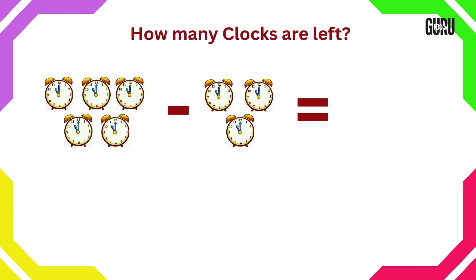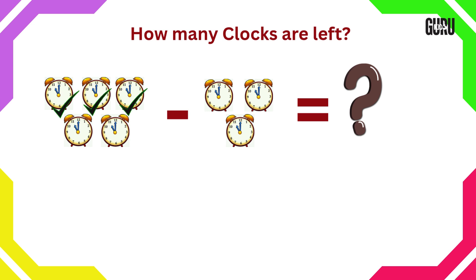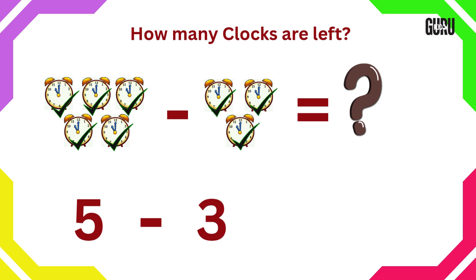How many clocks are left? Here we have to do subtraction. Let's count. 1, 2, 3, 4, 5 and 1, 2, 3. So 3 clocks need to be crossed out from 5.